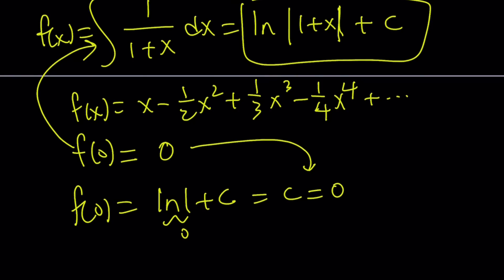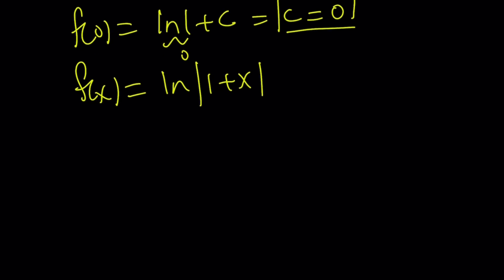So hopefully you see what I see. If c equals 0 and f(x) is ln absolute value of 1 plus x plus c, then f(x) is going to be ln(1 plus x). The absolute value, we don't need it, but let's just keep it there for now.